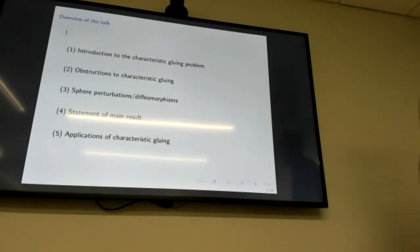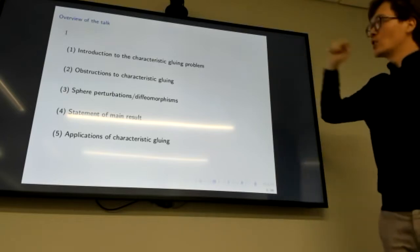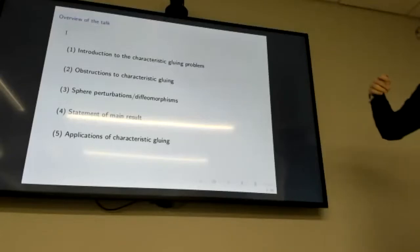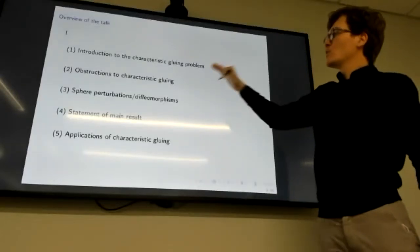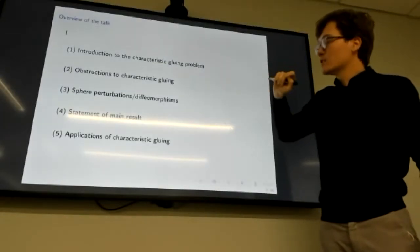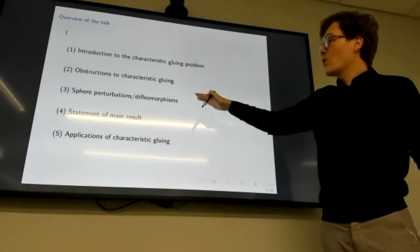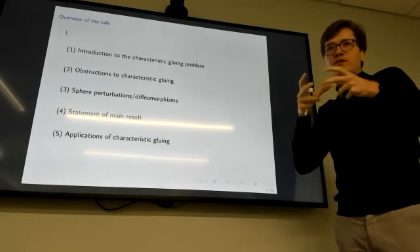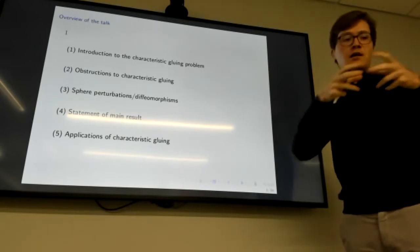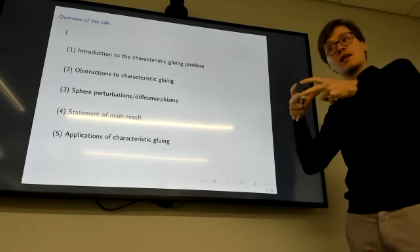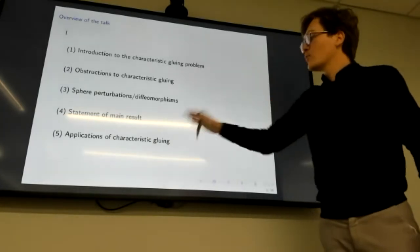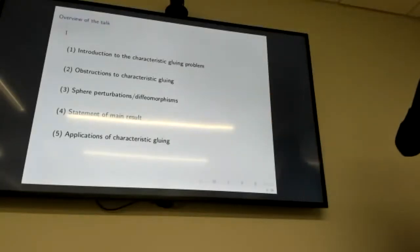I want to start by introducing the characteristic gluing problem — what is initial data for the Einstein equations, and setting up characteristic initial data. Then we will talk about these obstructions, derive them together, see how gauge perturbations allow us to understand which conservation laws are just gauge and which have genuine geometric meaning, state the main result, and then discuss some applications.